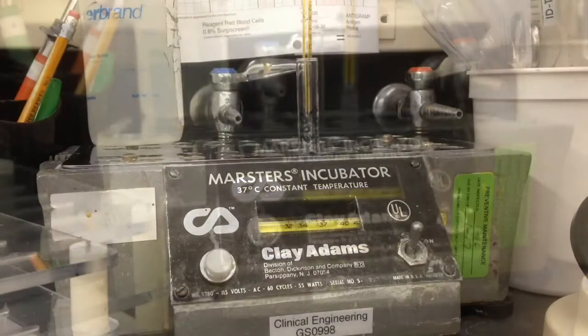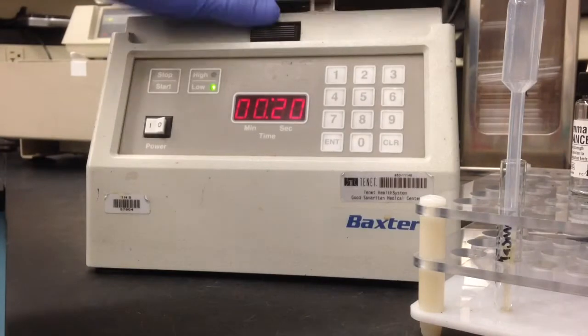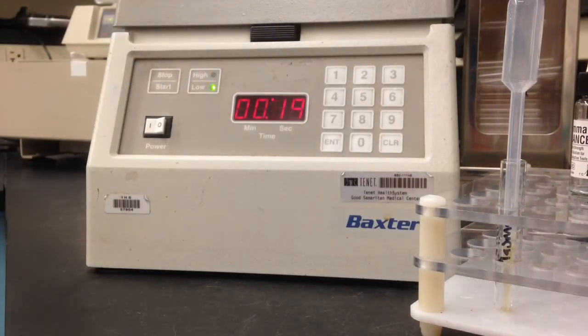After this is done incubating, which it is now, we're going to centrifuge the specimen and then again check to see if there's any agglutination at the 37 degrees step.